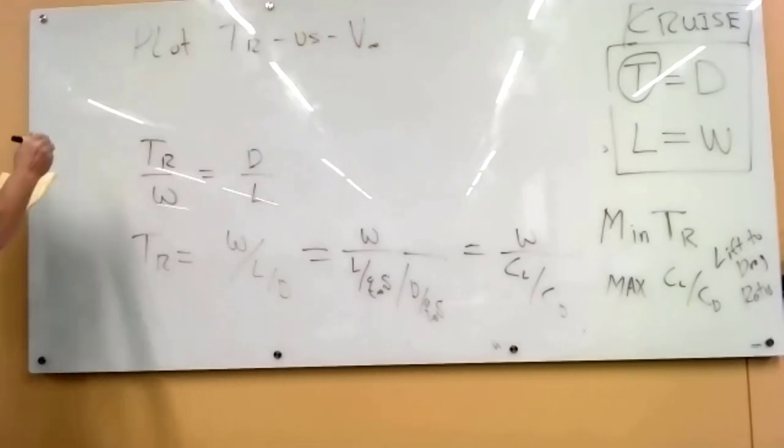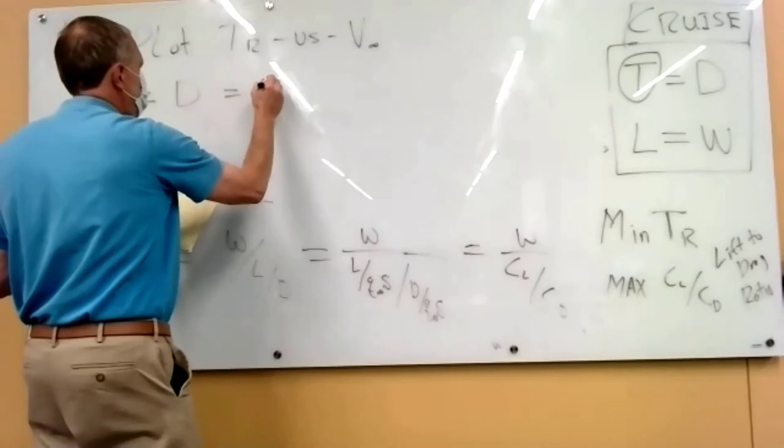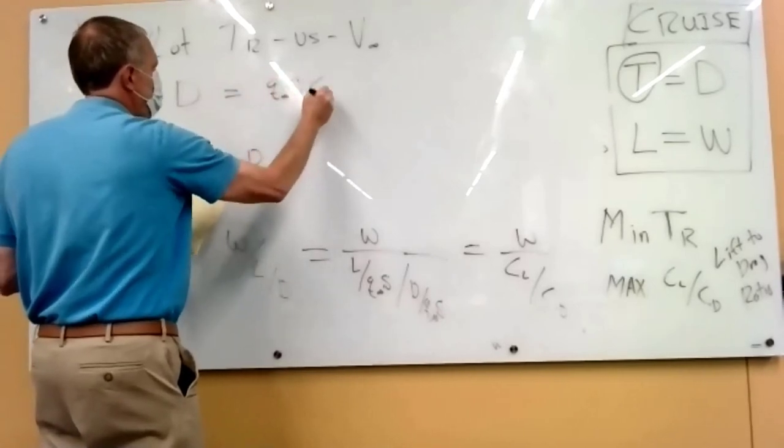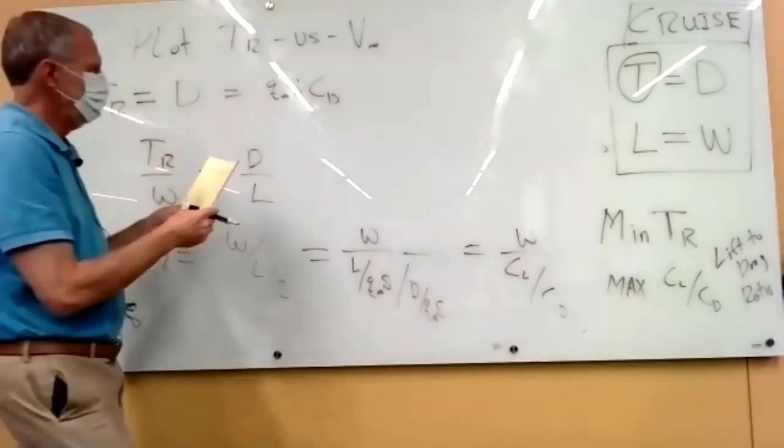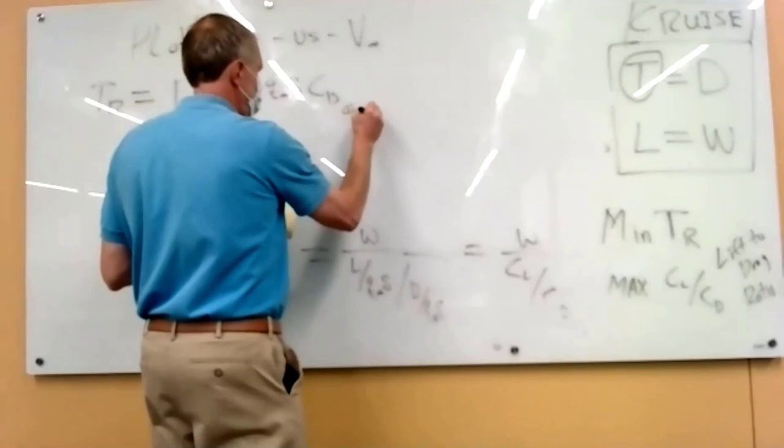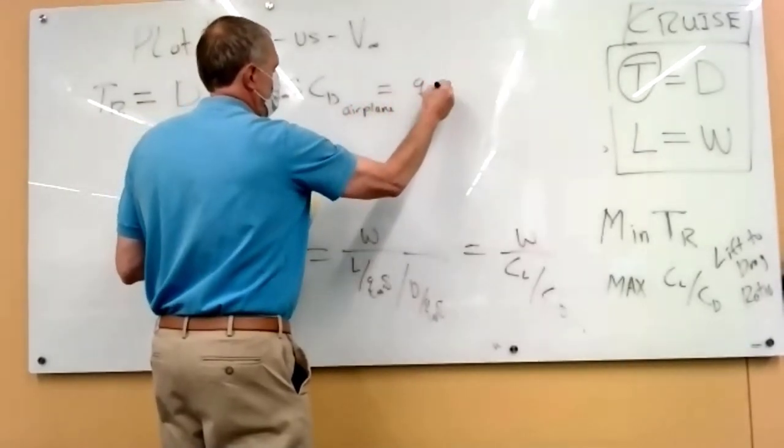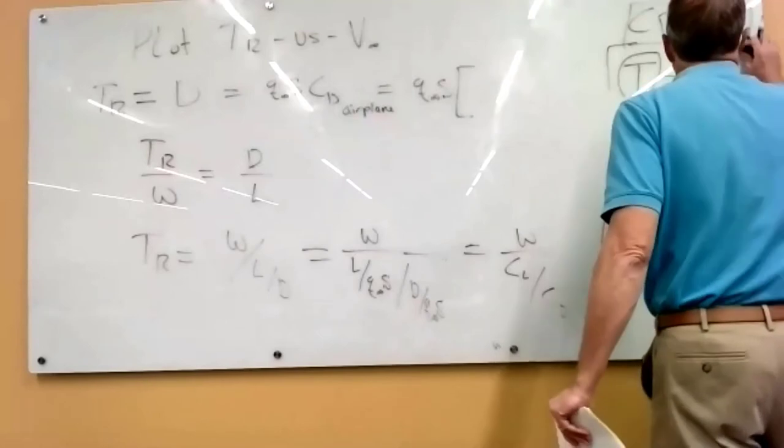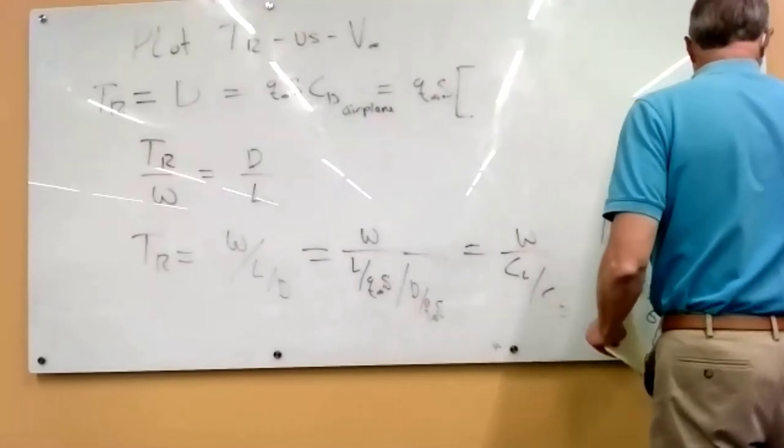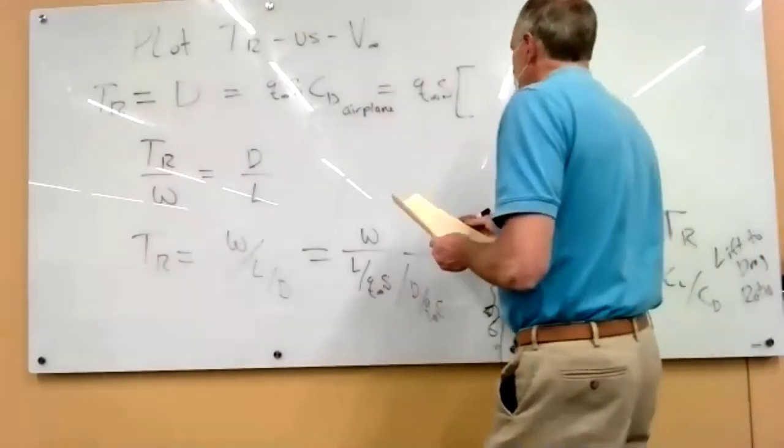So what is the thrust required? Thrust required equals the drag. But how do you calculate drag? It comes from the drag coefficient. Because we're going to calculate the drag from the airfoil and the profile drag. This is the drag of the airplane. So let's put in that drag model that we talked about last time.